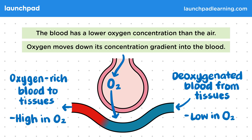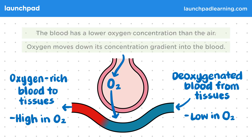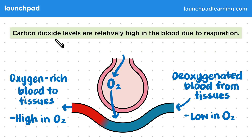Now we've covered the movement of oxygen into the blood to be used in respiration, let's have a look at the movement of carbon dioxide, which is a waste product of respiration. Carbon dioxide levels are relatively high in the blood due to respiration.